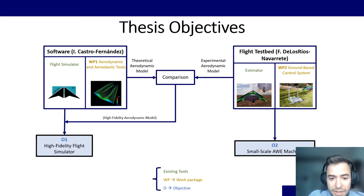And on the right, we have the experimental part, where we have an estimator, an extended Kalman filter with the avionics on board and also with some sensors on the ground. And we have Work Package 2, the ground-based control system, that is the focus of Francisco de los Rios thesis.